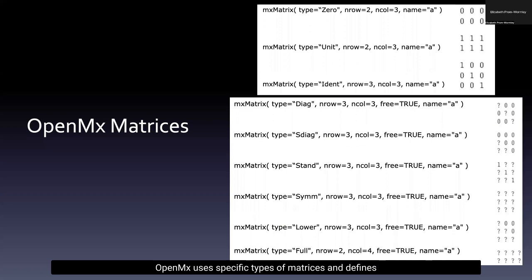OpenMX uses specific types of matrices and defines those matrices by type. A zero matrix is a matrix with all zeros in every cell. This particular matrix has two rows and three columns, as identified by nRows equals 2 and nCol equals 3. Additionally, matrices will be named, and in this case, this matrix has a name called A. You as a user will define the name of the matrix yourself, and it can be whatever you'd like it to be. It doesn't have to be a single letter.